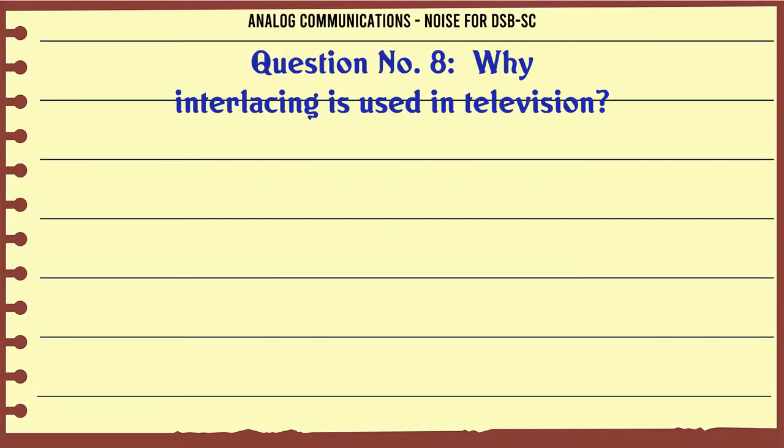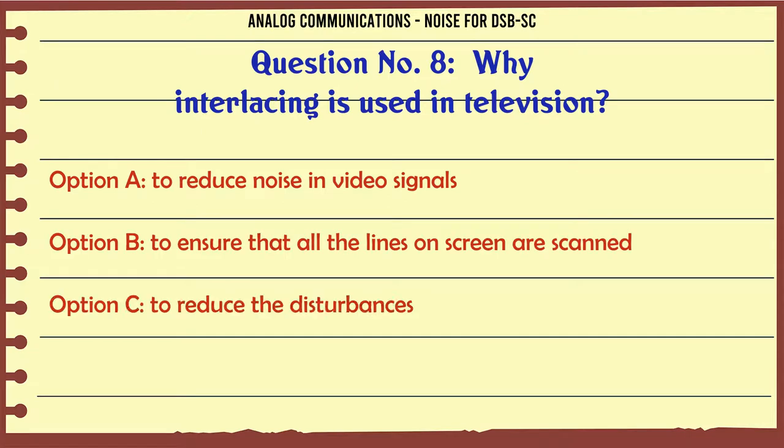Why interlacing is used in television? Option A: To reduce noise in video signals. Option B: To ensure that all the lines on screen are scanned. Option C: To reduce the disturbances. Option D: To avoid flicker. The correct answer is to avoid flicker.